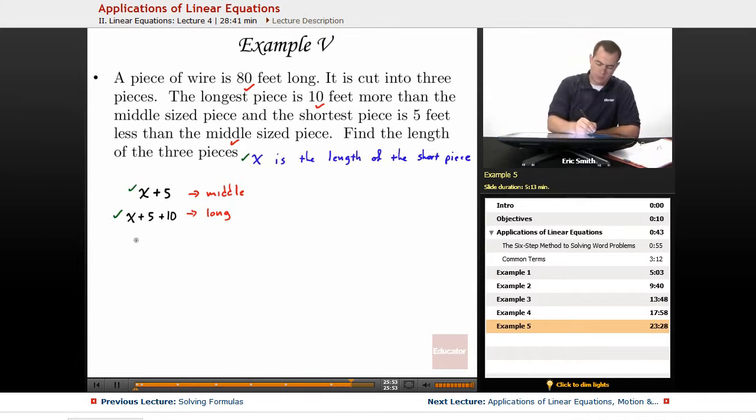Alright, let's set up this equation. So short piece, x, plus our middle piece, x plus 5, plus our long piece, x plus 15. All of this should equal a total of 80 feet.